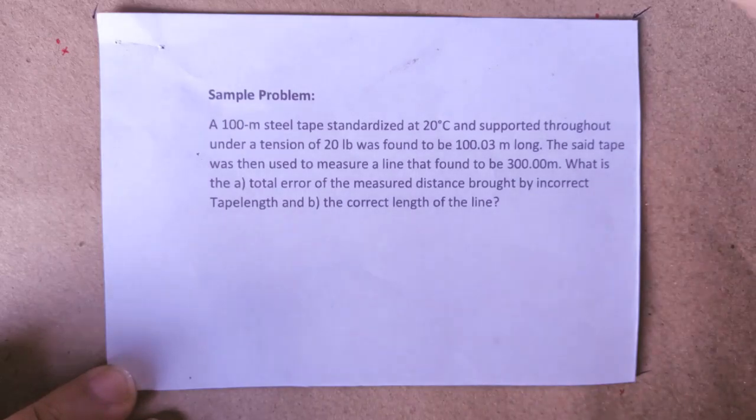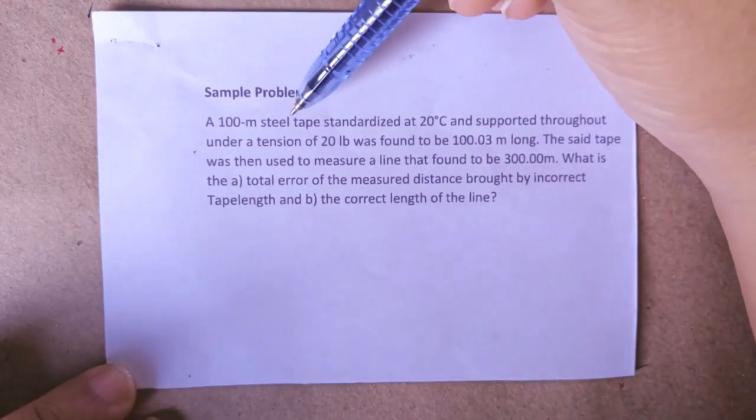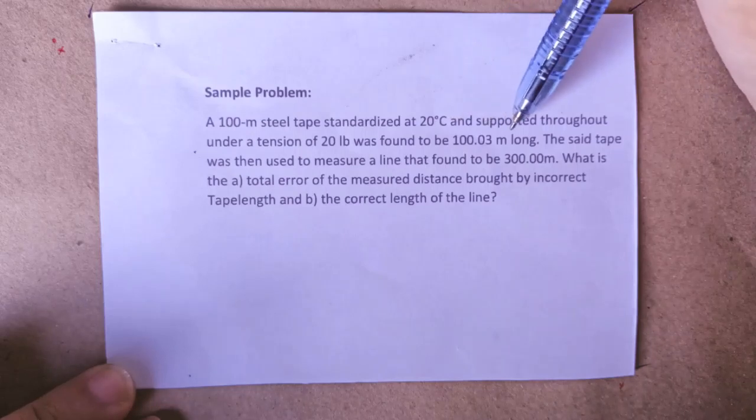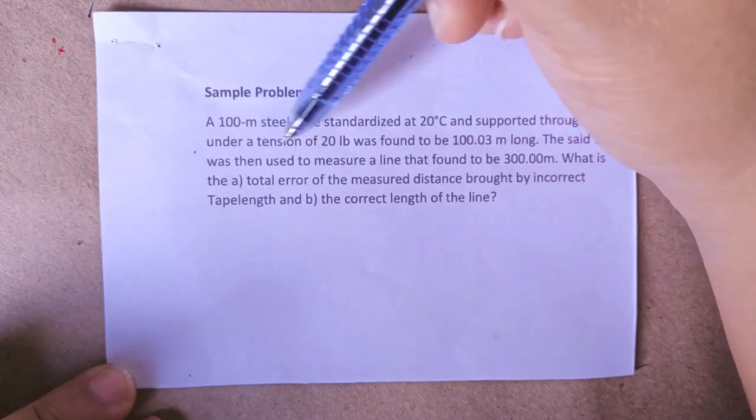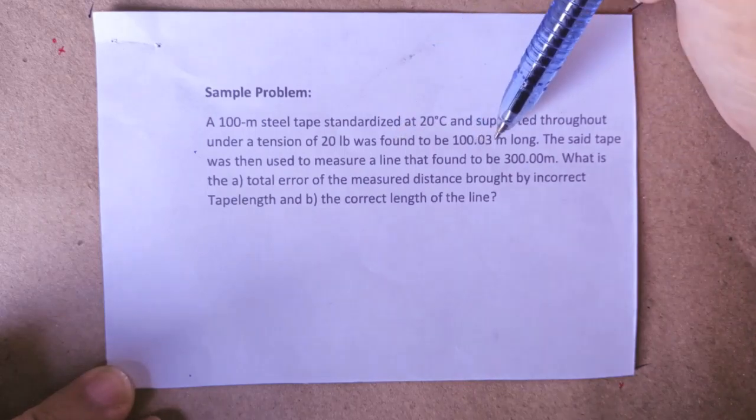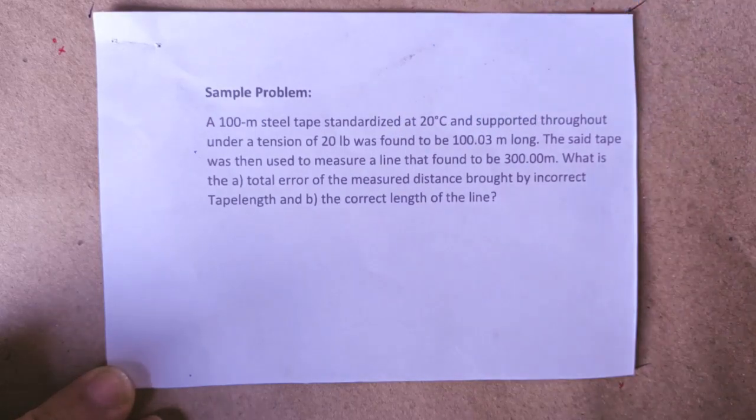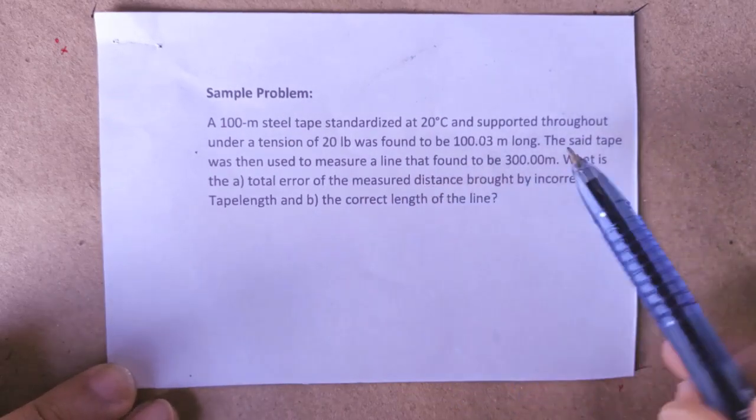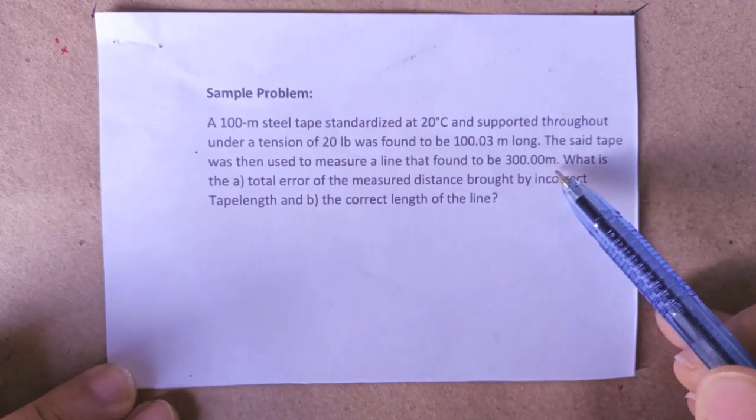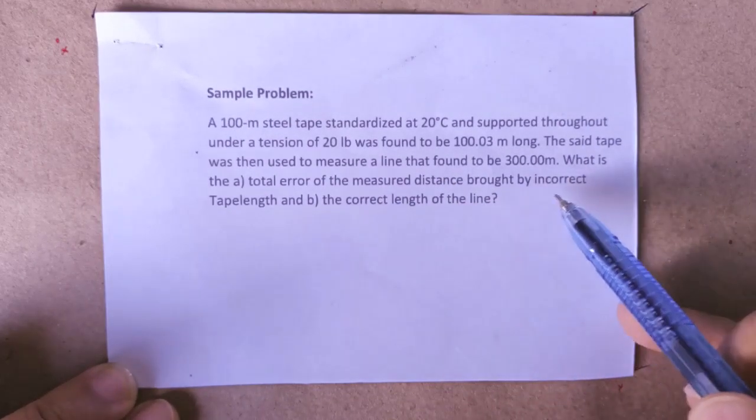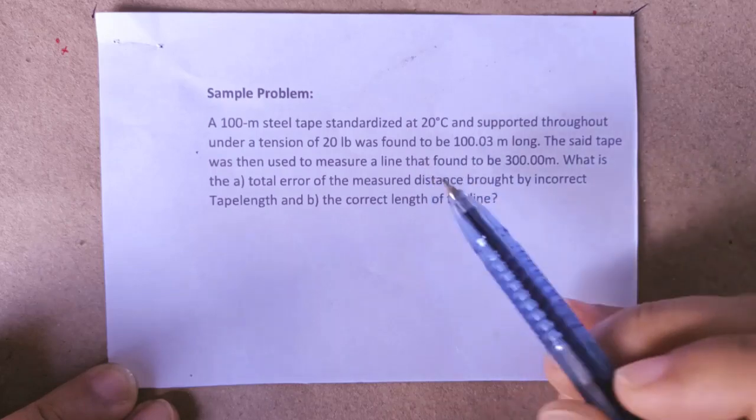Sample problem: A 100-meter steel tape standardized at 20 degrees Celsius and supported throughout under a tension of 20 pounds was found to be 100.03 meters long. The said tape was then used to measure a line that found to be 300 meters long. What is the total error of the measured distance brought by incorrect tape length and the correct length of the line?